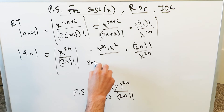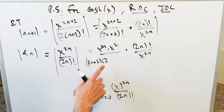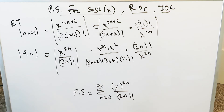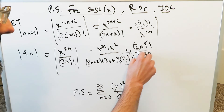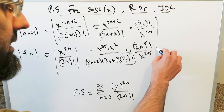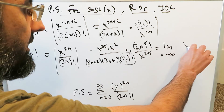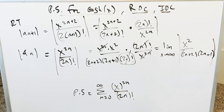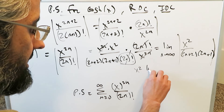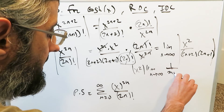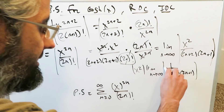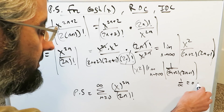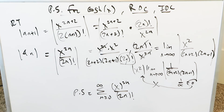Opening up the factorial: (2n+2) factorial equals (2n+2) times (2n+1) times (2n) and onwards. The (2n) factorial terms cancel, leaving (2n+2) times (2n+1) in the denominator. Taking the limit as n approaches infinity of the absolute value of x squared over ((2n+2)(2n+1)): we pull out x squared, giving x squared times the limit of 1 over ((2n+2)(2n+1)). As n approaches infinity, this limit equals 1 over infinity, which equals 0. So the entire expression equals 0.